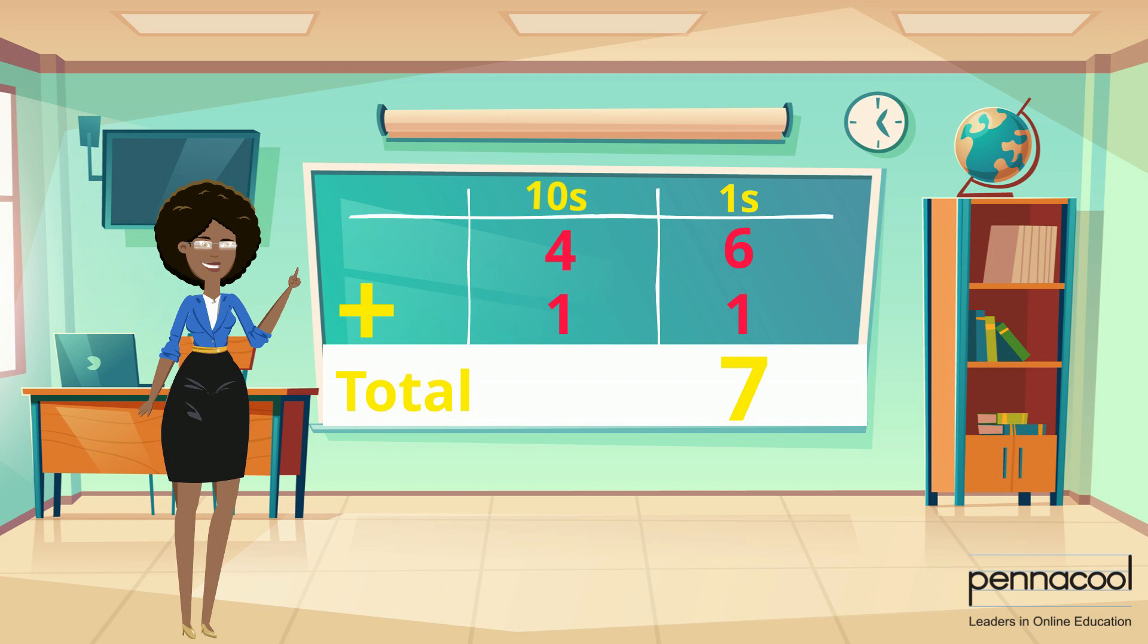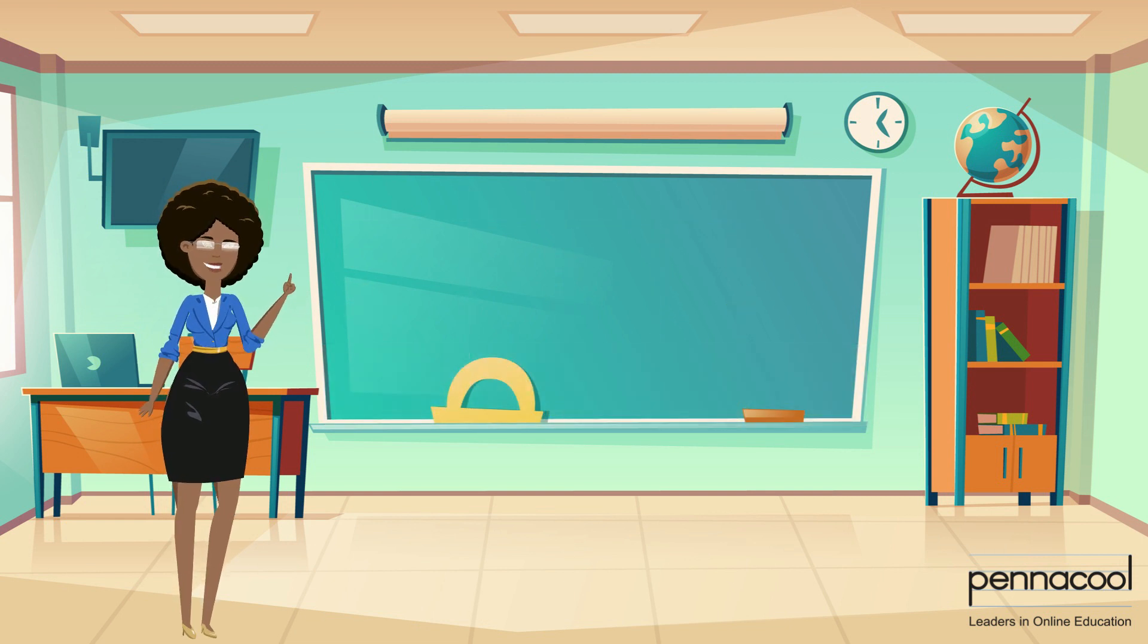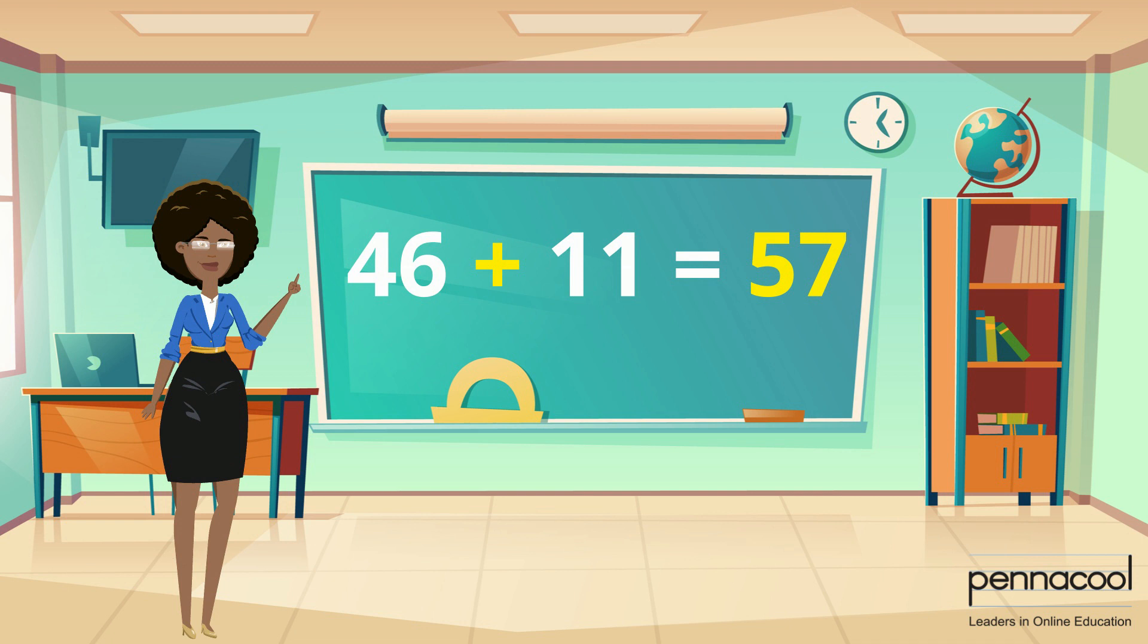Next, we move over to our tens column, where we have 4 added to 1, which is 5. So we put 5 in our total space in our tens column. So what's our answer? That's right, 57.